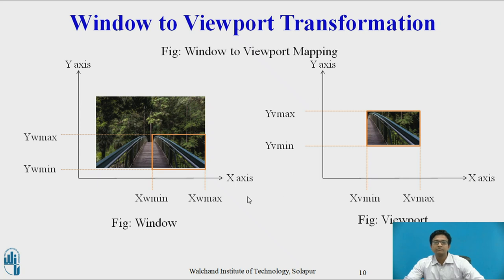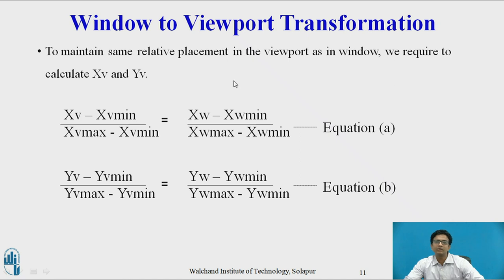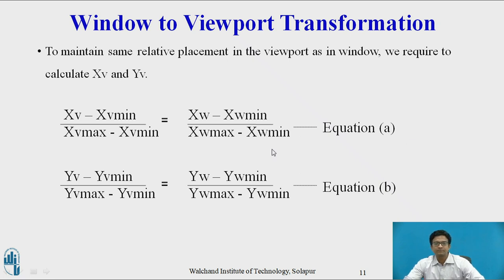This is the procedure to map a window to a viewport. We use an interpreter term to maintain the same relative placement in the viewport as in the window. We calculate x_v and y_v using the following equations: (x_v − x_v_min) / (x_v_max − x_v_min) = (x_w − x_w_min) / (x_w_max − x_w_min), which gives equation 1 for x_v. And (y_v − y_v_min) / (y_v_max − y_v_min) = (y_w − y_w_min) / (y_w_max − y_w_min), which gives equation 2 for y_v.